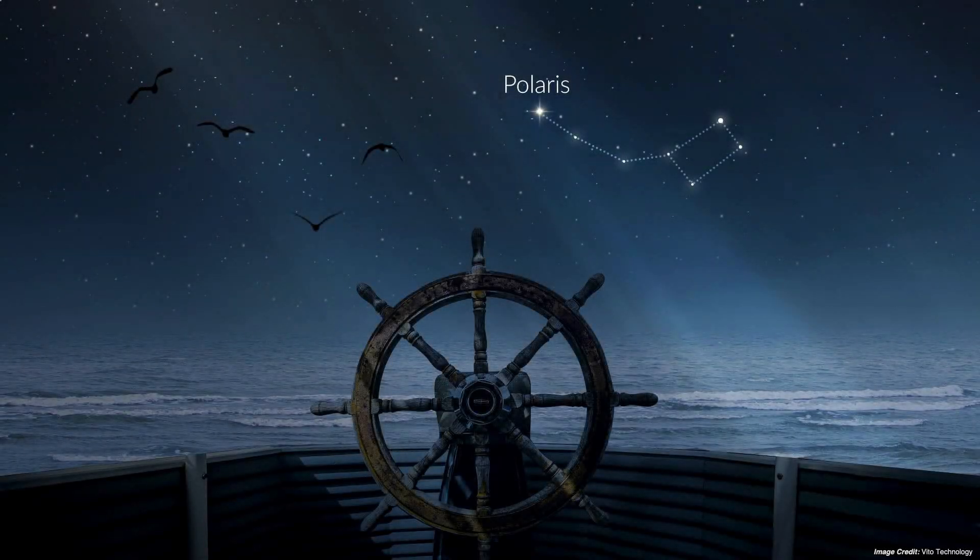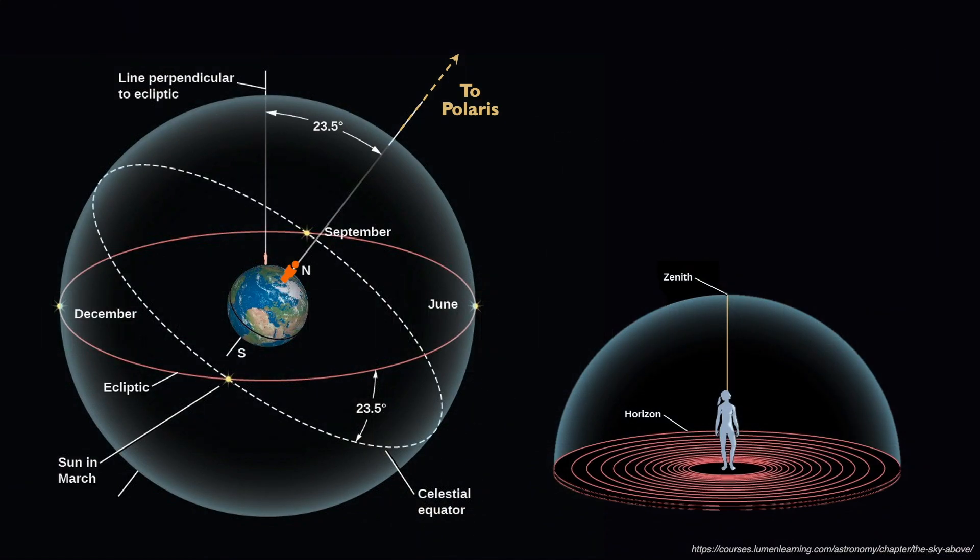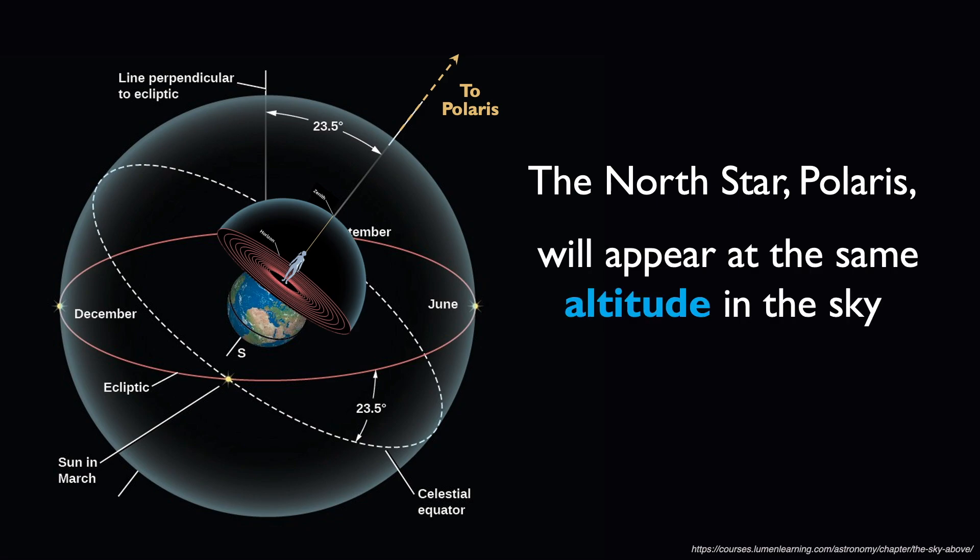Let's talk in detail about the altitude of Polaris and why it's so significant. Recall that the North Star appears at the same altitude in the night sky as your geographical latitude. Let's explore this concept a bit more and see why this is the case.